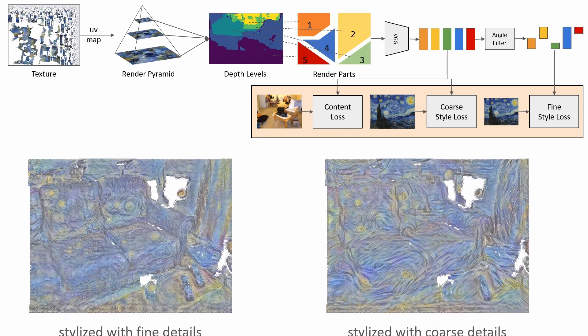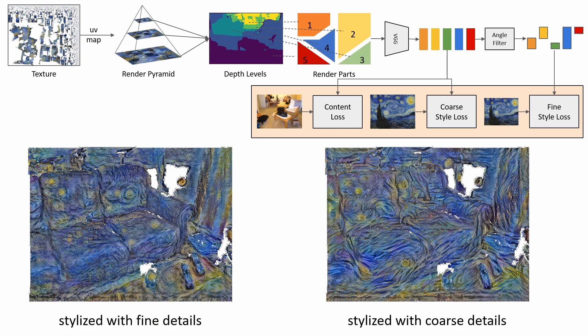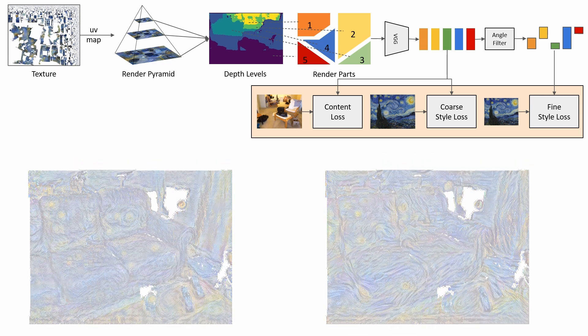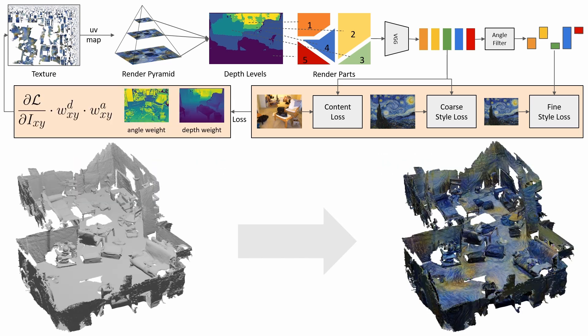Next, we encode the parts and remove features that are observed from small grazing angles. We optimize the remaining features together with a low-resolution style image to create fine details. For the rest, we create only coarse details with a high-resolution style image. We scale per-pixel gradients with angle and depth weights during backpropagation to resolve artifacts caused by the prior discretization steps.